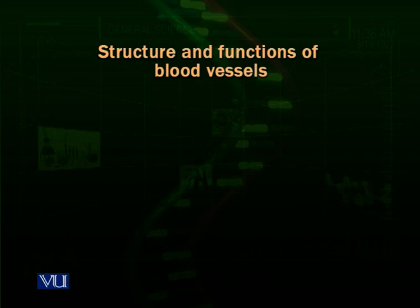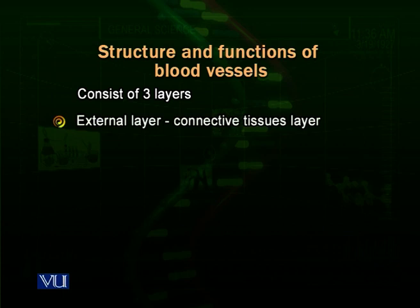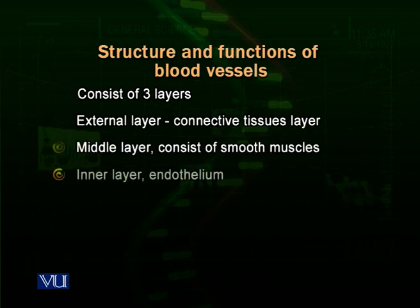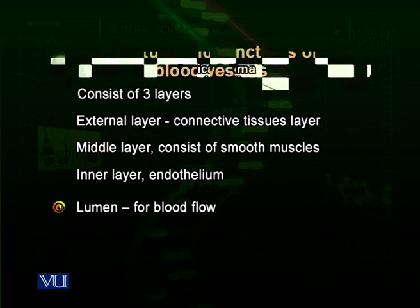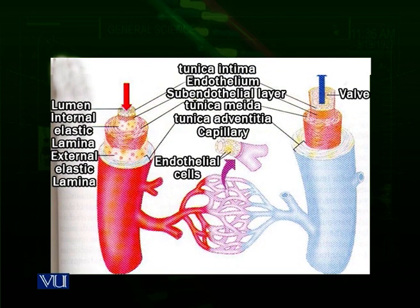Blood vessels — all of them, except for capillaries — consist of three layers: an outermost layer, a middle layer, and an inner layer. The outermost layer consists of connective tissue. The middle layer consists of smooth muscles, maybe different layers of smooth muscles. The inner layer is an epithelial layer — we call it endothelium because it is present on the inside. Then there is a lumen for blood flow.